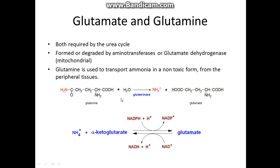Glutamine is converted to glutamate by glutaminase. As you can see here, the NH2 group is removed — water comes in, binds, and you get NH4+ out in its protonated state. NH4+ plus alpha-ketoglutarate produces NADP+ from NADPH via glutamate dehydrogenase to form glutamate. Going the other way, glutamate drives the reverse reaction using NAD+, producing NADH. Note that NAD and NADP are actually different cofactors.